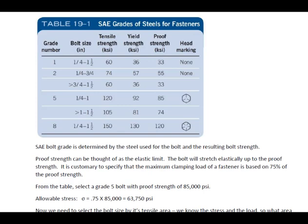What I want you to think of proof strength is, it can be thought of as the elastic limit. As you tighten a bolt, you're going to develop a clamp load, and that clamp load will cause the bolt to stretch elastically. Think about your stress-strain curve. Up to the elastic limit, the bolt is going to stretch. Proof strength is the elastic limit of the bolt.